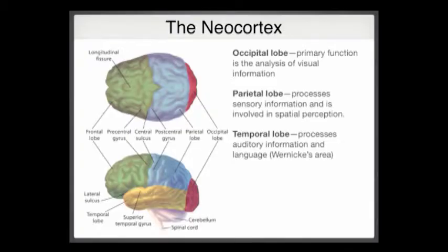Moving down, we have the temporal lobe. Its role is to process auditory information and language — Wernicke's area, for example, sits right up top and is involved in processing language. The temporal lobe is also involved in processing memory, as the hippocampus lives inside the temporal lobe.